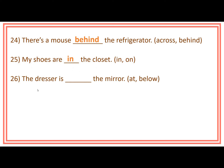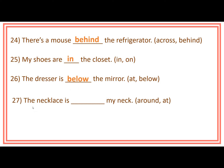Number 26: The dresser is ___ the mirror. Prepositions inside the bracket are at and below. Answer: The dresser is below the mirror. Number 27: The necklace is ___ my neck. Prepositions inside the bracket are around and at. Answer: The necklace is around my neck.